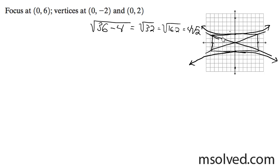And our equation is going to be y squared over 4 minus x squared over 32 is equal to 1. That's it.